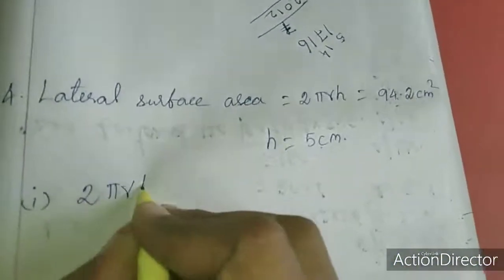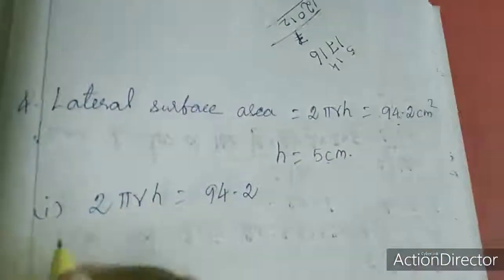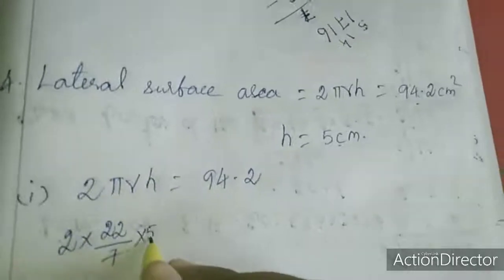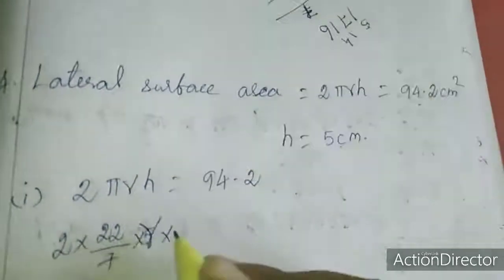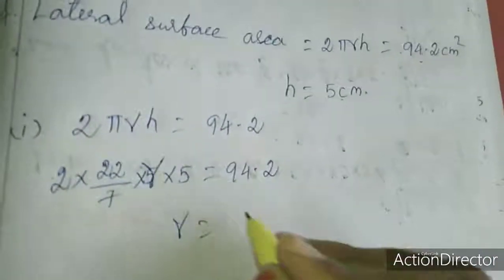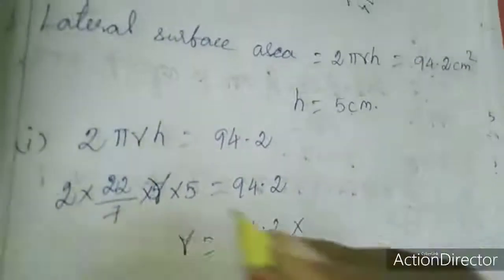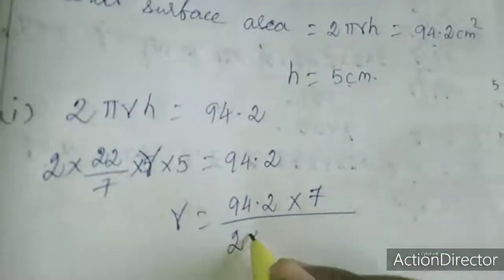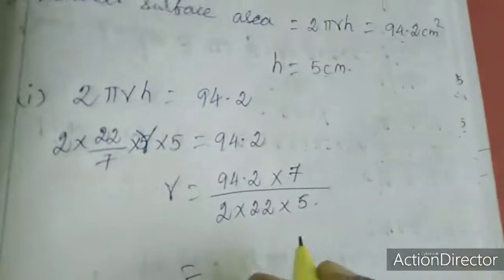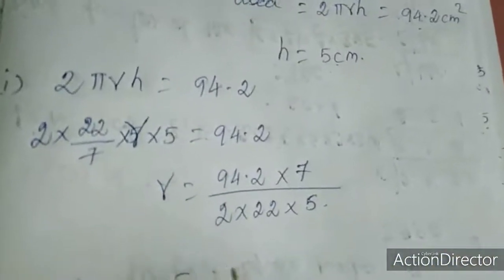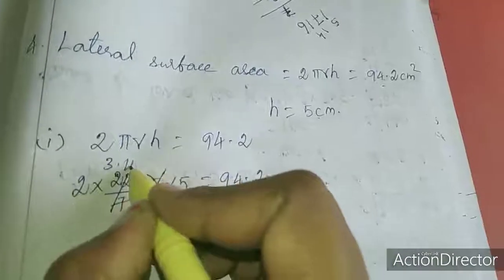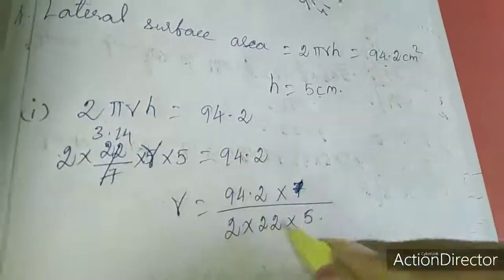Lateral surface area 2 pi r h equals 94.2. So 2 into pi times r times 5 equals 94.2. We need to find r. They told us to use pi equals 3.14, so 2 times 3.14 times 5 times r equals 94.2.